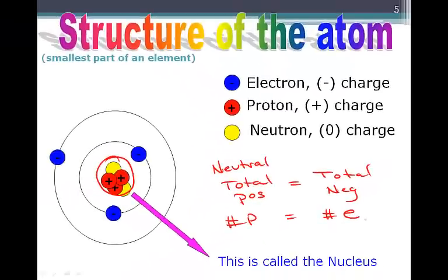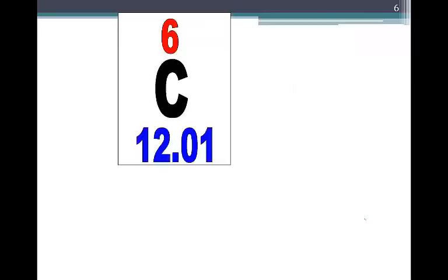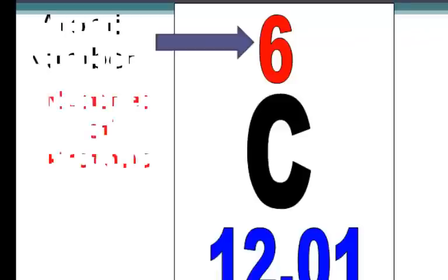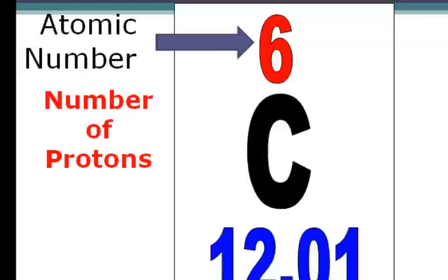So how can we figure out the number of protons, neutrons, and electrons in an atom? We're going to look at a cell from the periodic table. The top number — for example, six — refers to the atomic number, which is the number of protons found in the nucleus.